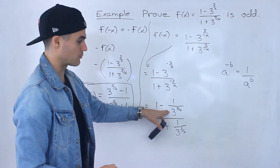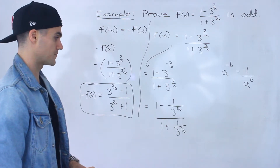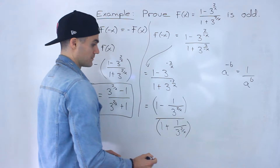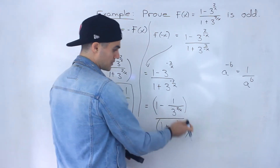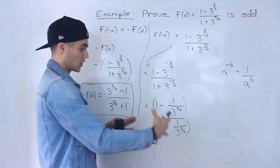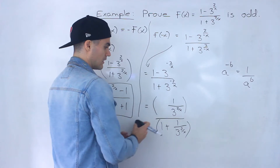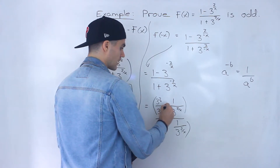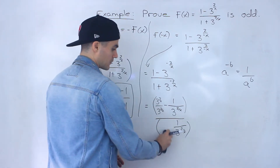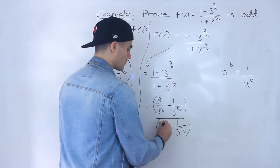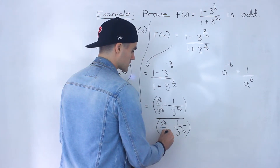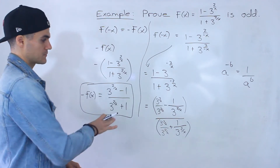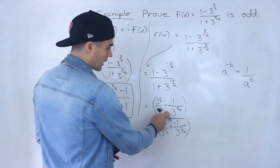Now we want to combine the numerator into one fraction and the denominator into one fraction. To combine them we need a common denominator of 3^(2/x). So the 1 in the numerator becomes 3^(2/x)/3^(2/x), and we subtract 1/3^(2/x). Similarly in the denominator, 1 becomes 3^(2/x)/3^(2/x) plus 1/3^(2/x). Now we have common denominators.